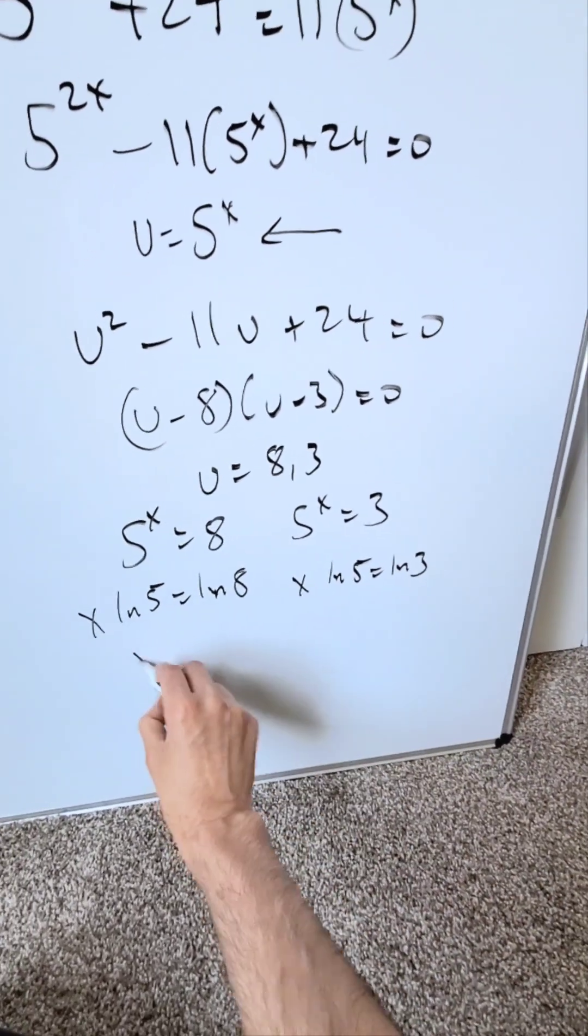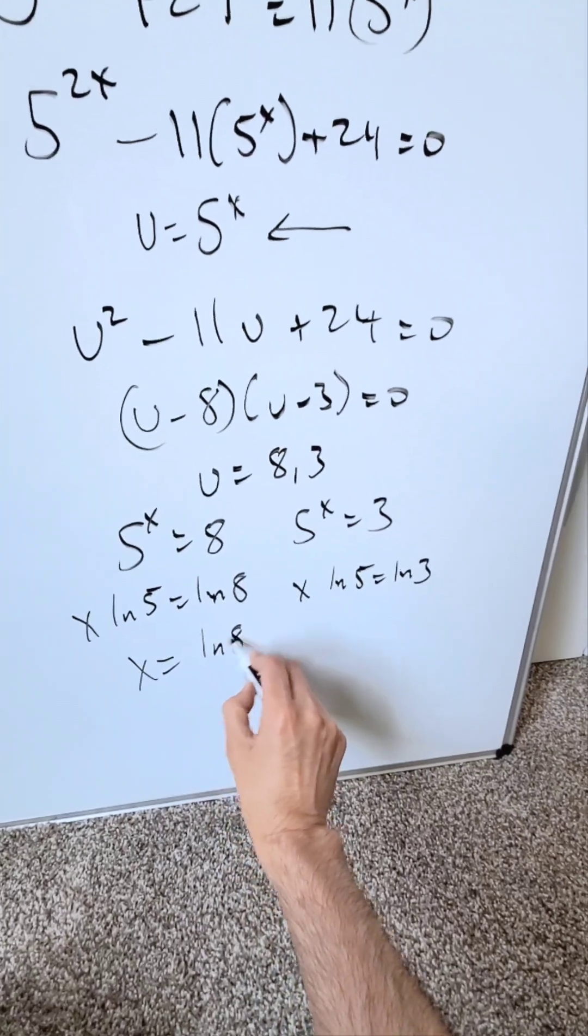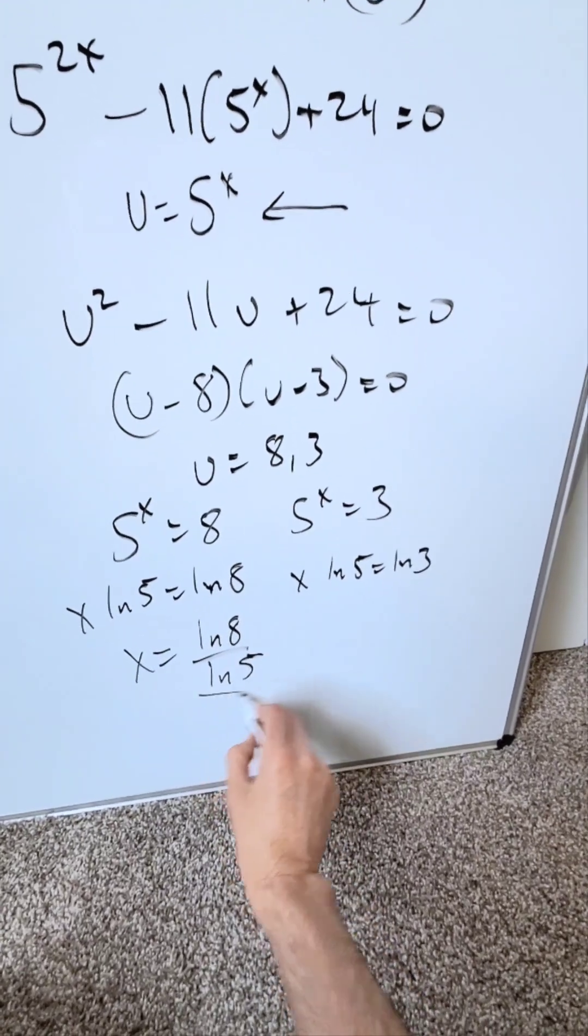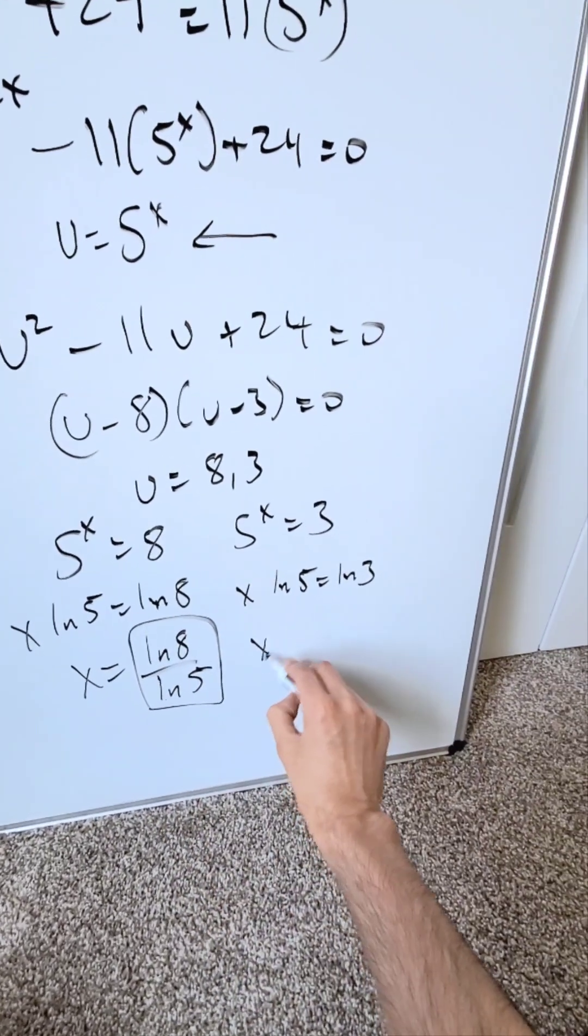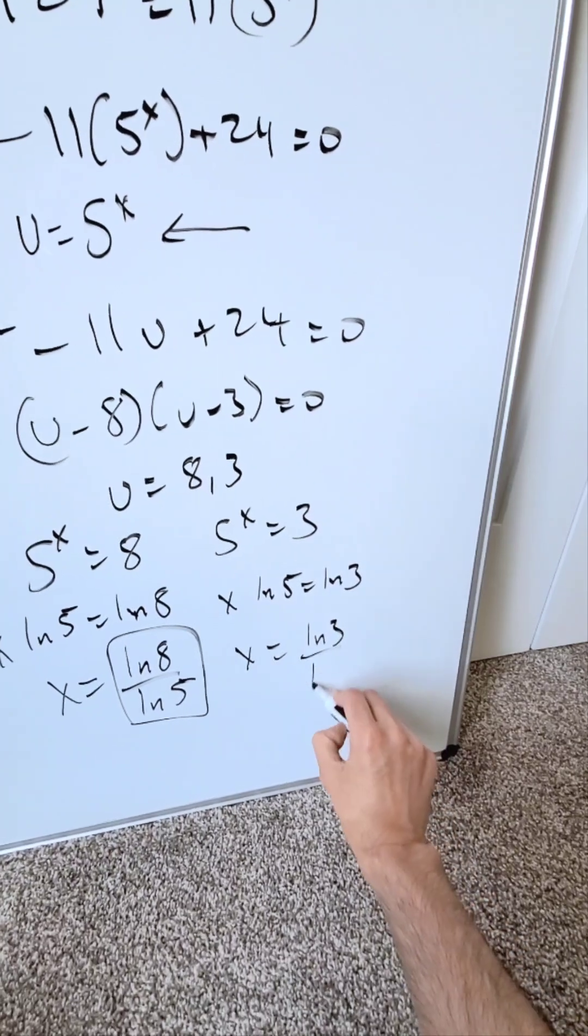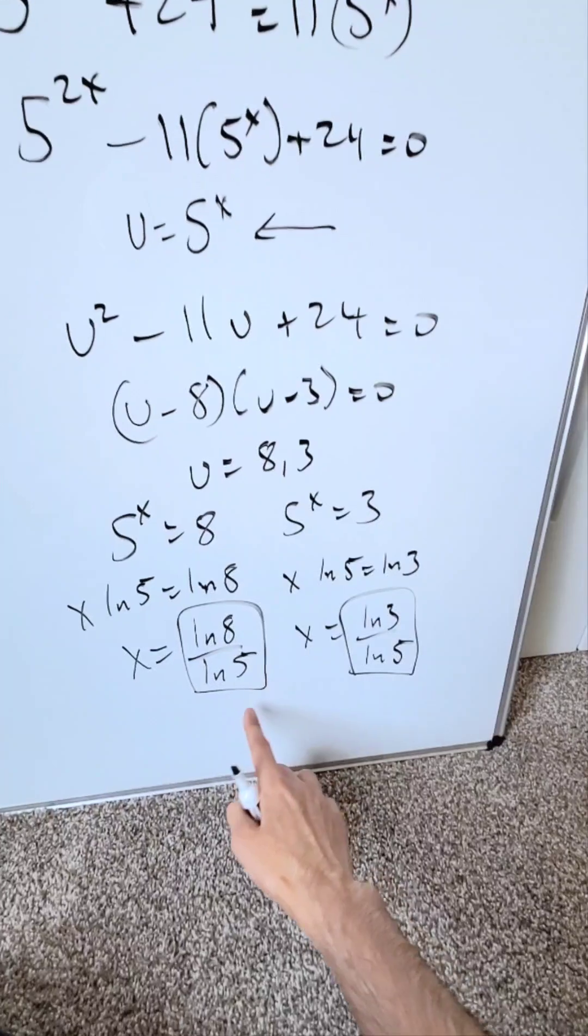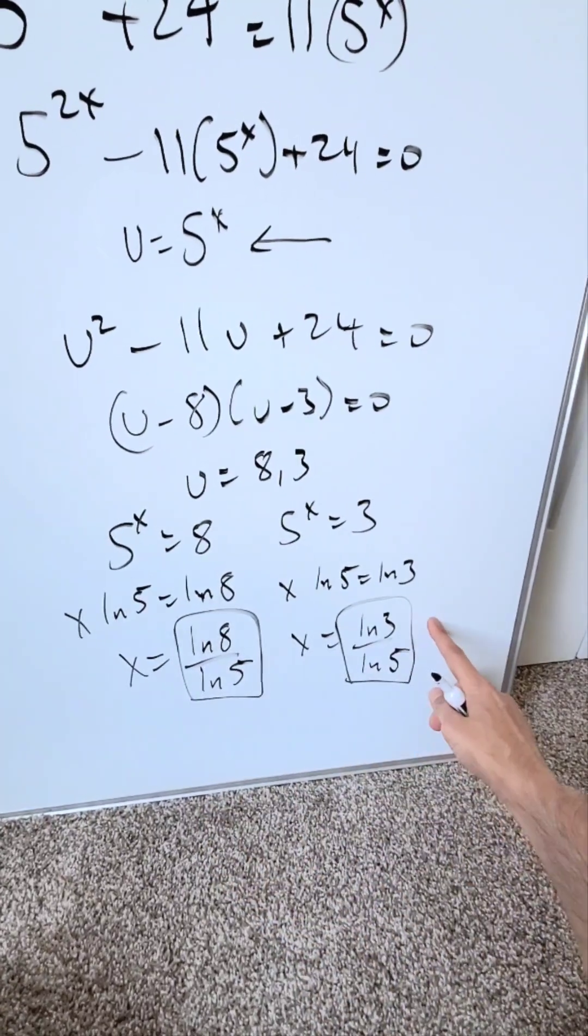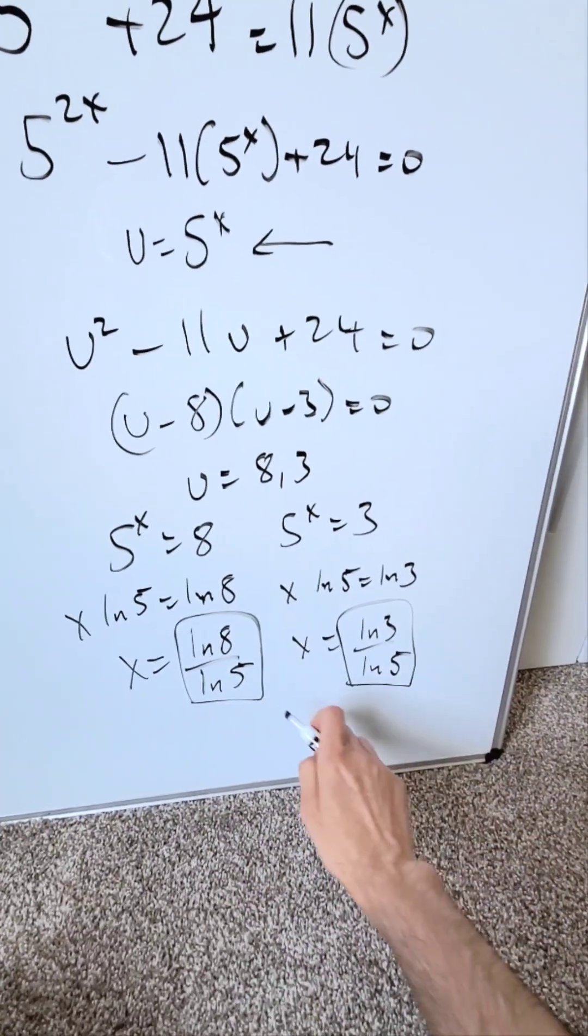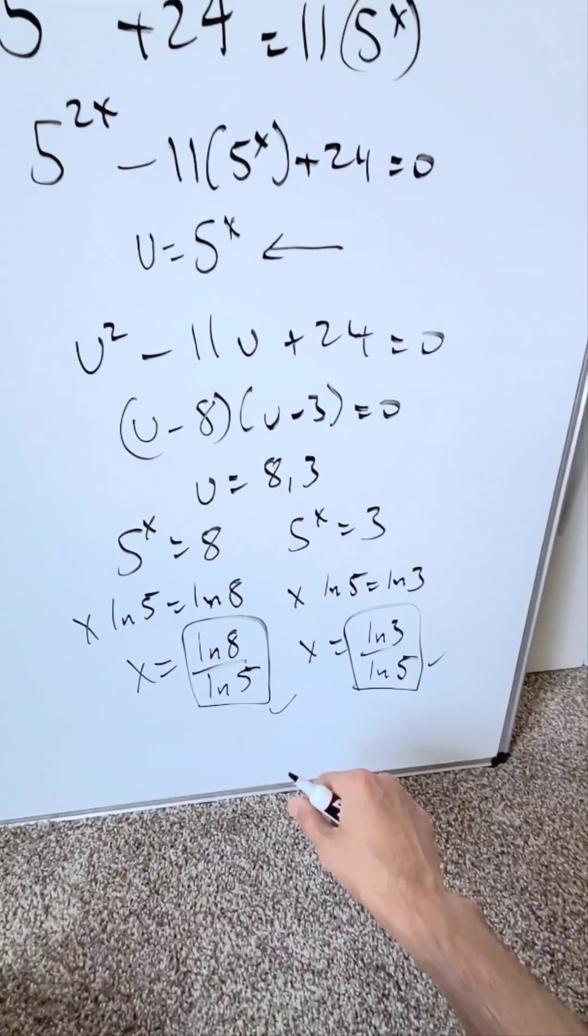Solve for x in both cases. x here is equal to natural log 8 divided by natural log 5. That right there is one answer. x here is equal to natural log 3 divided by natural log 5. And this right here is another answer, and both of these should be correct. Natural log 8 divided by natural log 5, and natural log 3 divided by natural log 5. I'm confident these answers are good.